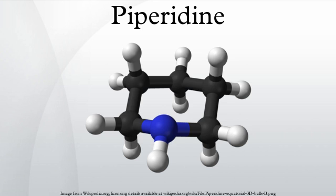Industrially, piperidine is produced by the hydrogenation of pyridine, usually over a molybdenum disulfide catalyst: C5H5N + 3H2 → C5H10NH. Piperidine can also be reduced from pyridine via a modified Birch reduction using sodium and ethanol.